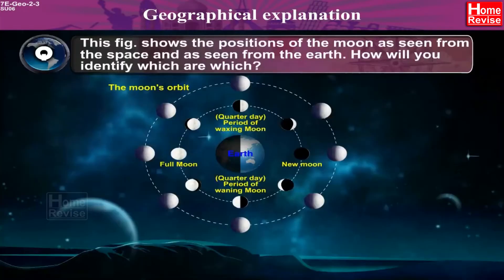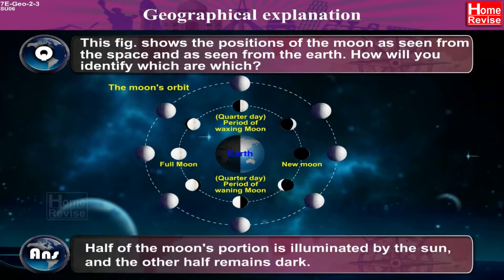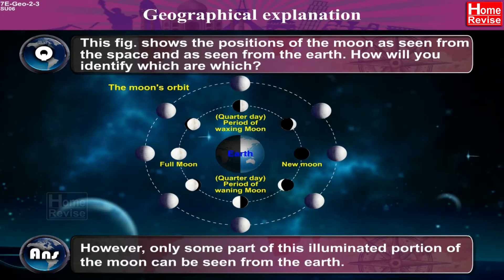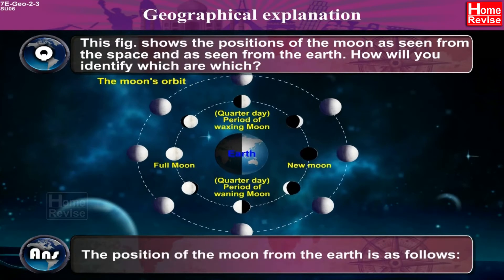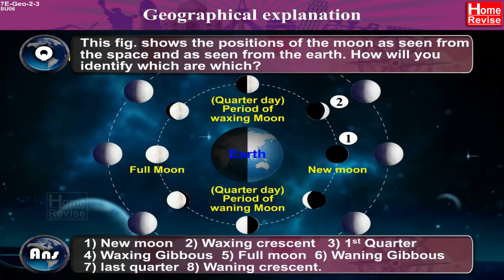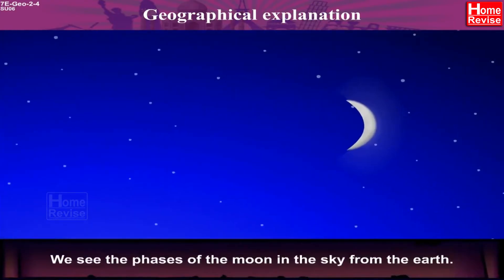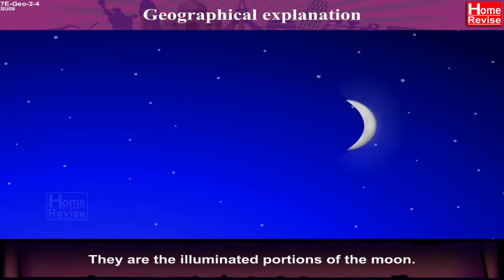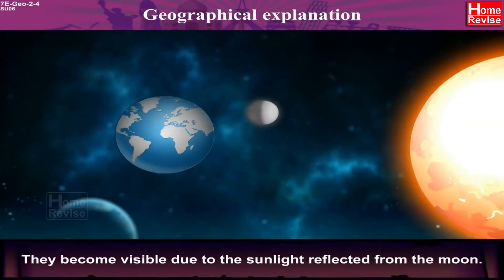Think about it. This figure shows the positions of the Moon as seen from space and as seen from the Earth. How will you identify which are which? Answer: Half of the Moon's portion is illuminated by the Sun and the other half remains dark. However, only some part of this illuminated portion of the Moon can be seen from the Earth. The position of the Moon from the Earth includes: 1. New Moon, 2. Waxing Crescent, 3. First Quarter, 4. Waxing Gibbous, 5. Full Moon, 6. Waning Gibbous. We see the phases of the Moon in the sky from the Earth — they are the illuminated portions of the Moon, which become visible due to the sunlight reflected from the Moon.